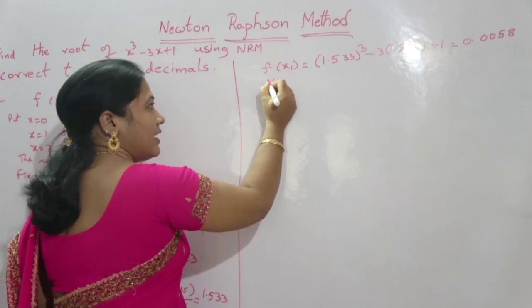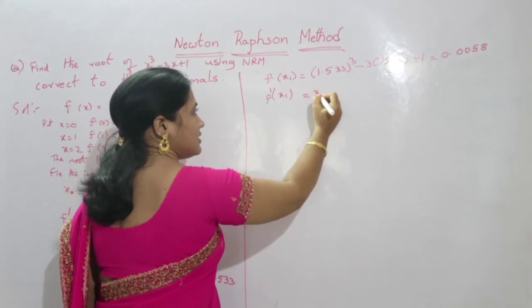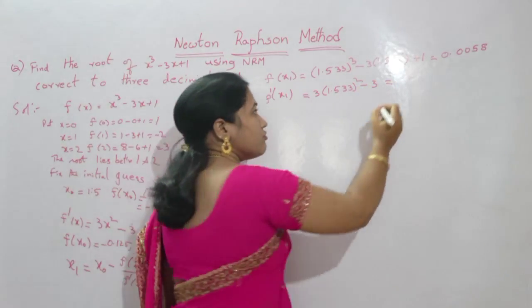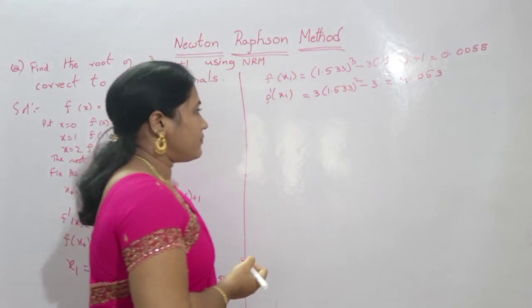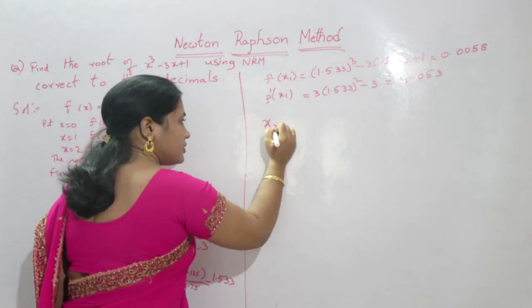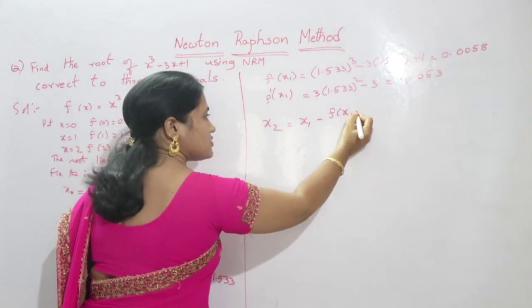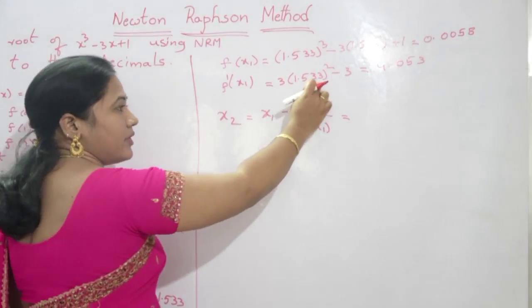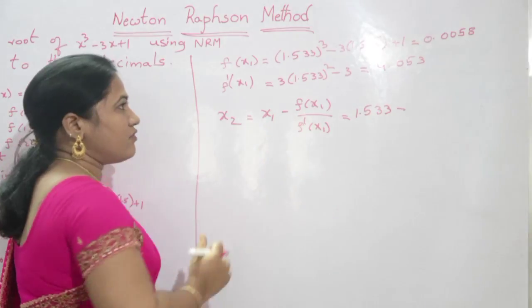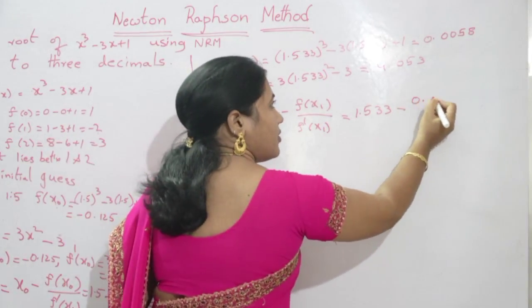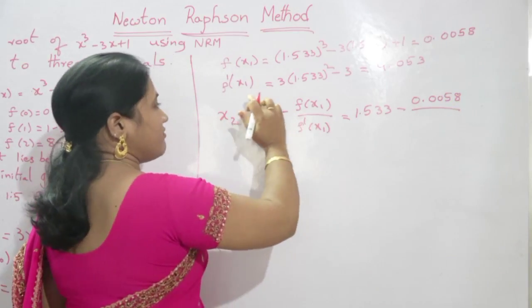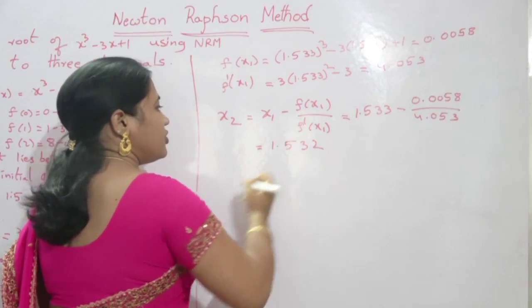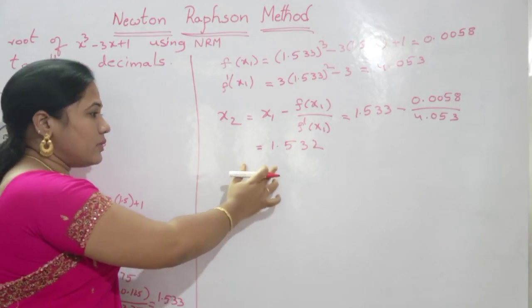Find f'(x₁): 3(1.533)² − 3 = 4.053. Go for the second approximation: x₂ = x₁ − f(x₁) / f'(x₁) = 1.533 − 0.0058 / 4.053 = 1.532. This is the second approximation: x₂ = 1.532.